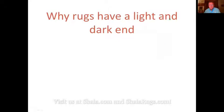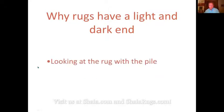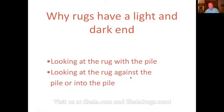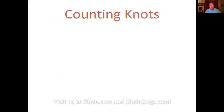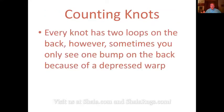People ask me all the time: why do rugs have a light end and a dark end? It's simple. They're tying a knot and pulling it down, so the rug pile goes in one direction. You can look at it with the pile — it looks lighter — or into the pile — it looks darker. So essentially it's looking at the rug with the pile or against the pile.